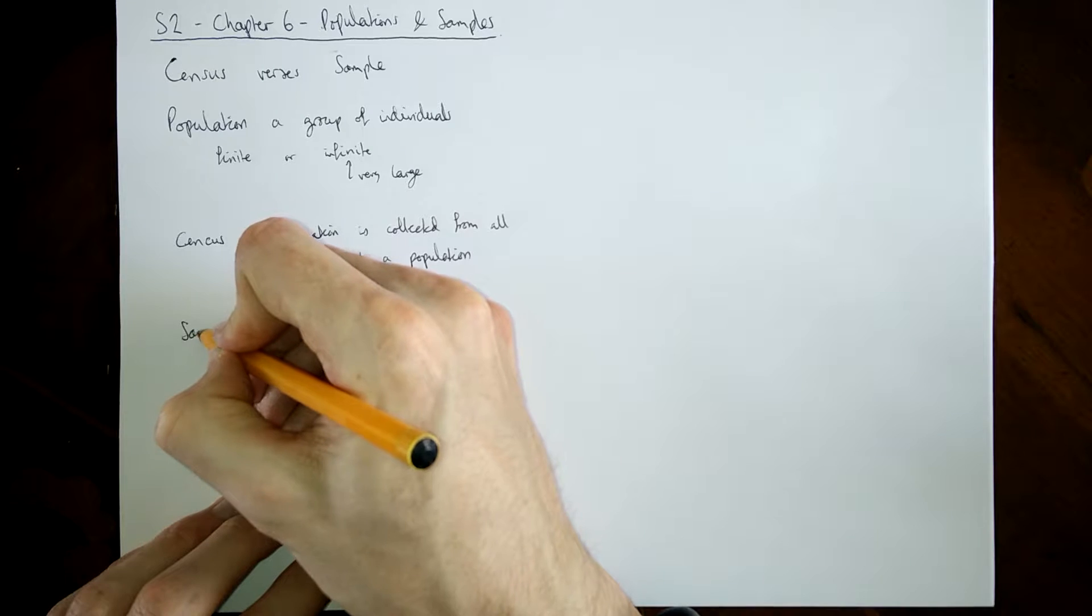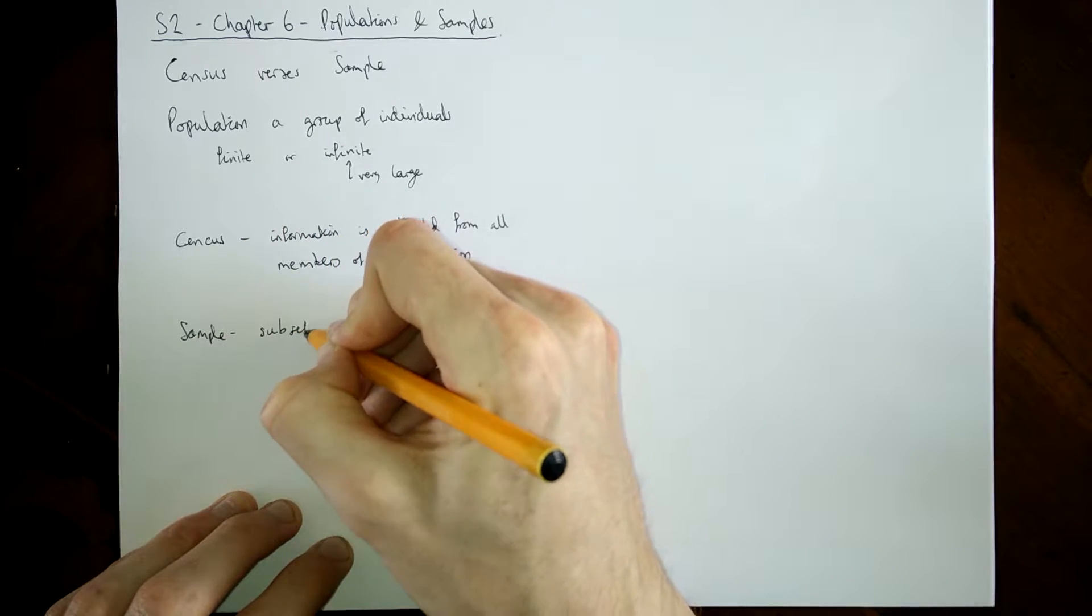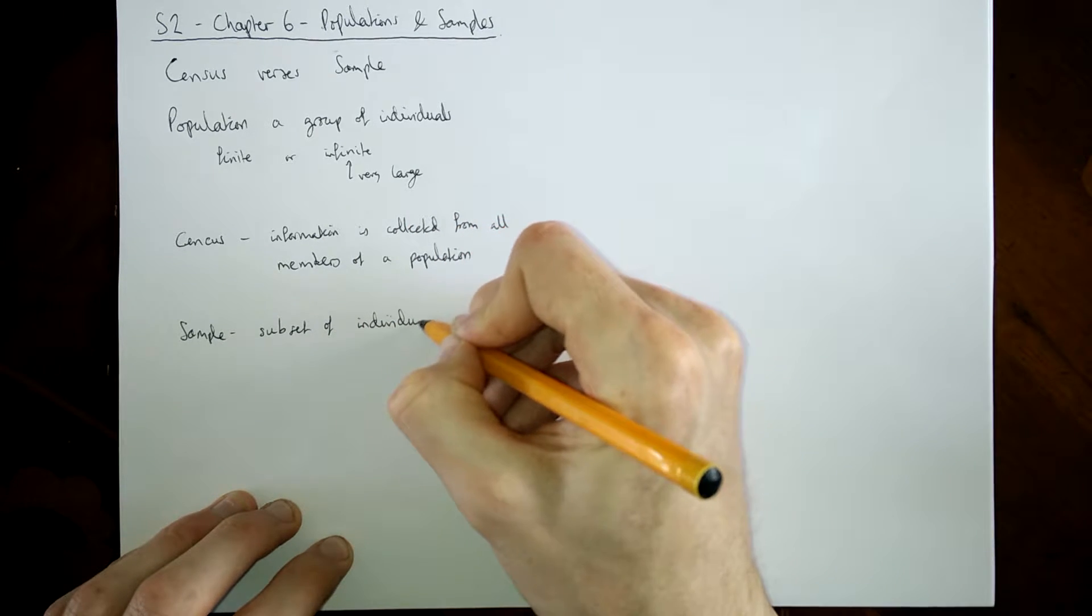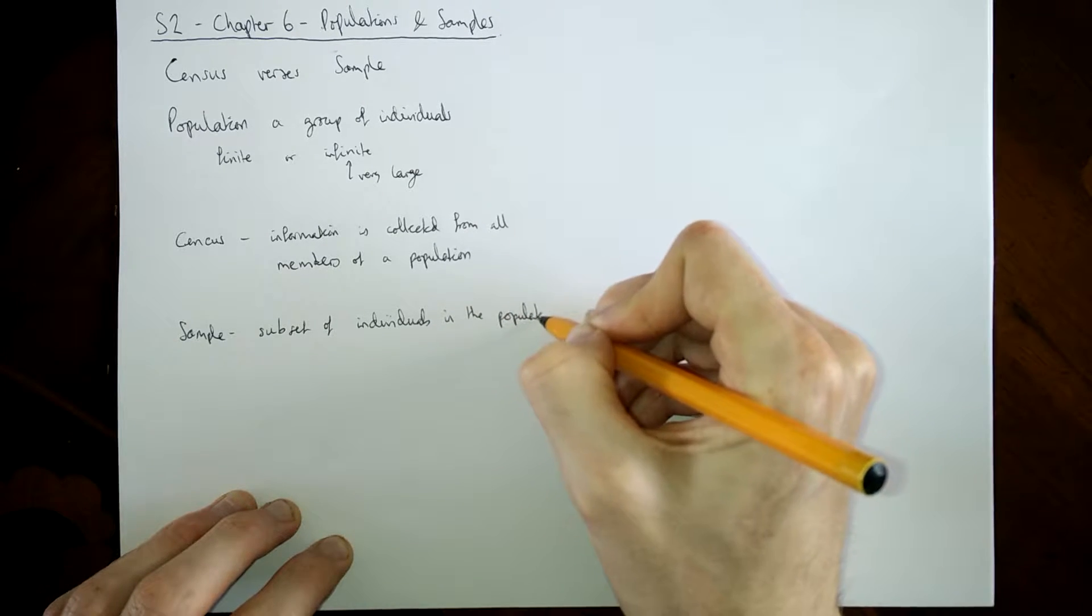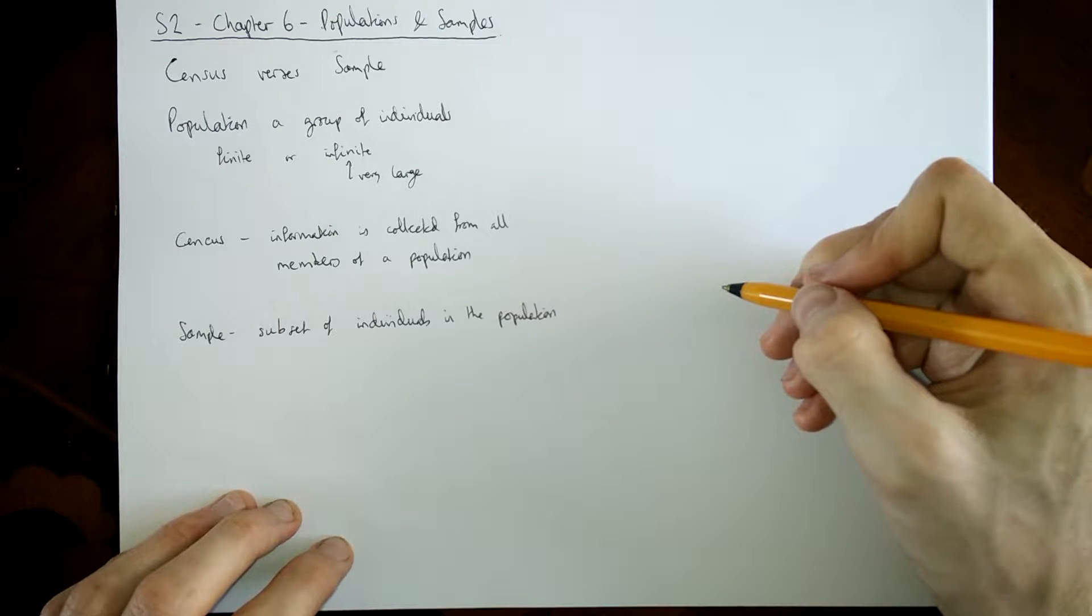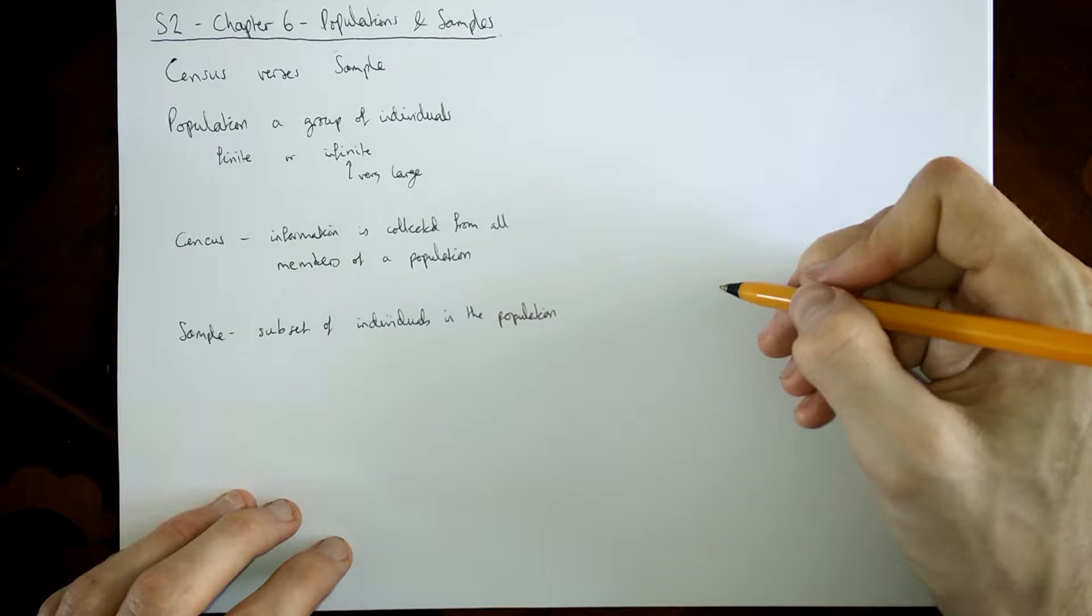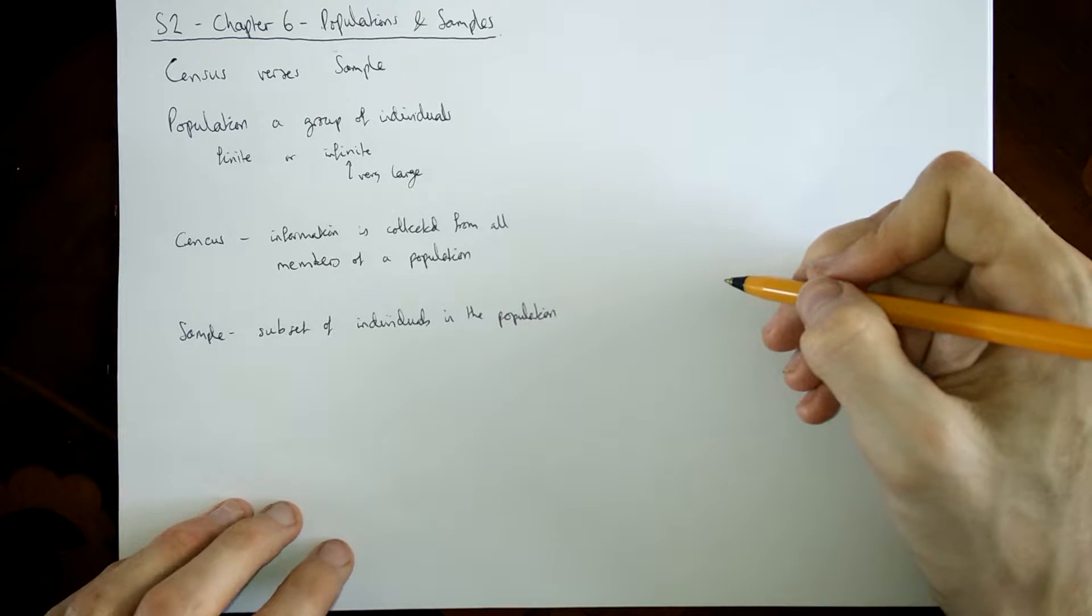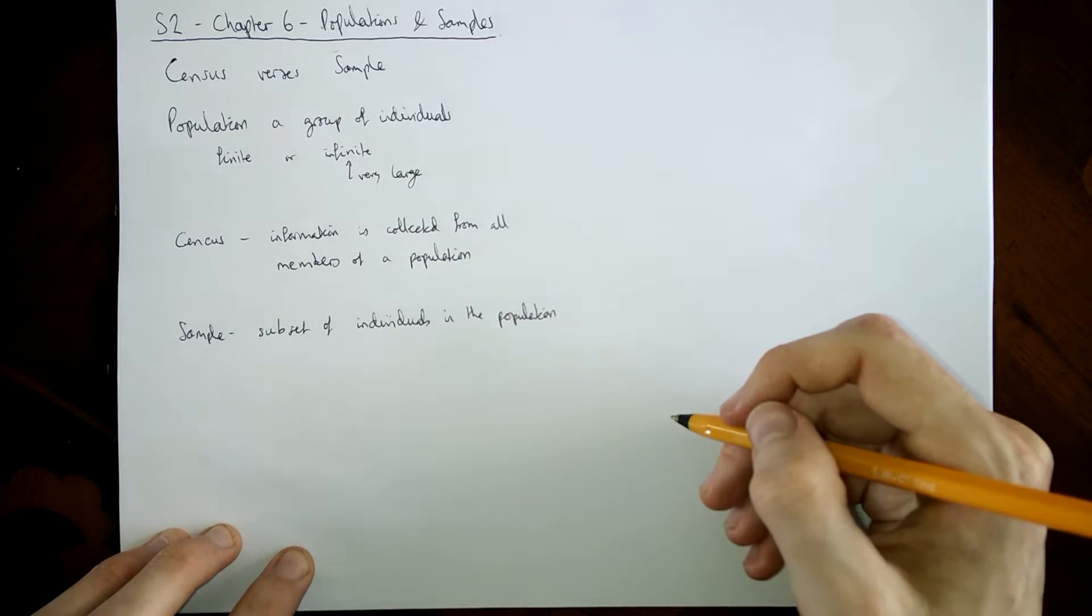A sample then is different because it's information collected from a subset of individuals in the population. So say a population is all the elephants in Africa, I might just go and collect information about 50 of them. That's a sample because it doesn't contain all the individuals in the population. It may not be a very good sample or maybe a very good sample. We'll come to what's a good and bad sample in a second.